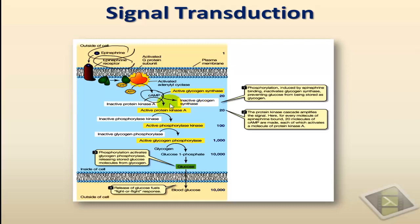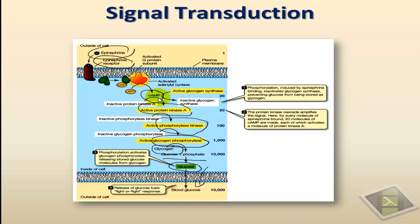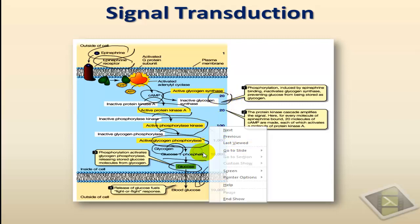Cyclic AMP, when it's produced, activates protein kinase A, which in turn activates a phosphorylase kinase enzyme, which in turn will activate a glycogen phosphorylase enzyme. That enzyme acts on glycogen, the storage form of glucose, and hydrolyzes it into glucose 1-phosphate, which is then dephosphorylated to produce glucose, which will diffuse out of the cell and flood the blood with glucose. From one molecule of epinephrine, we produce 20 molecules of cyclic AMP leading to the production of 10,000 molecules of glucose. That's the amplification process.